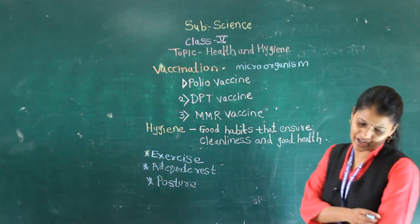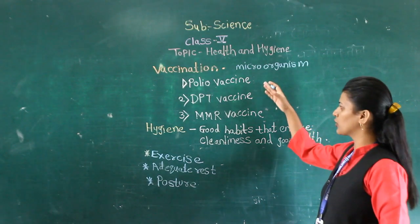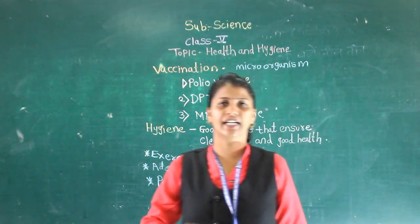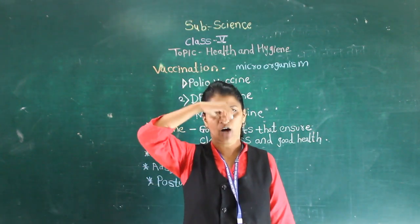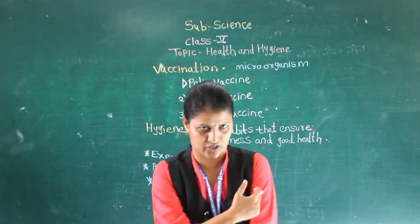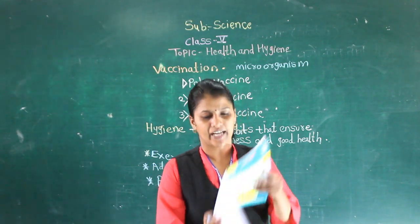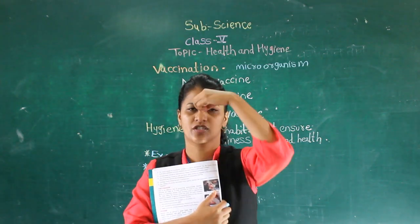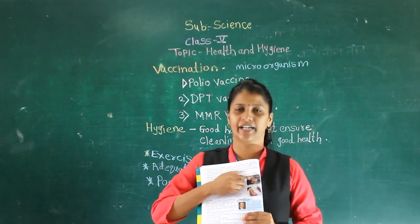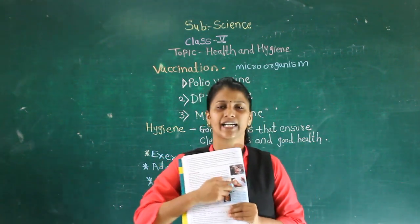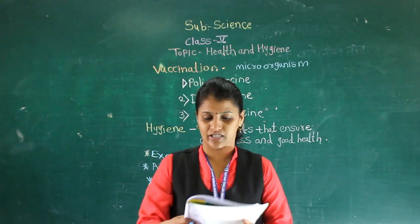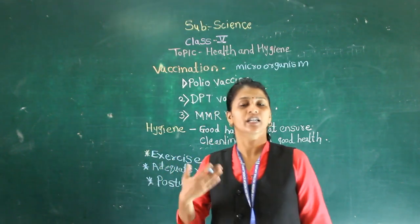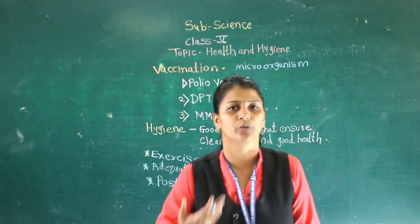There are different vaccinations such as Polio, DPT, and MMR. These vaccinations are given orally — that is, directly in the mouth — or by injection. When you were small, those vaccinations were given in your mouth. The vaccinations are given to fight against diseases and to increase your immunity power.